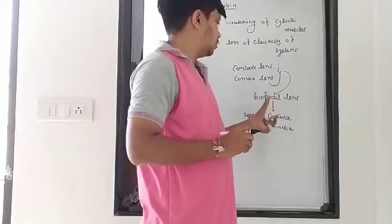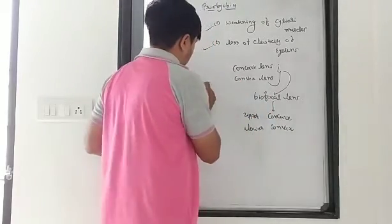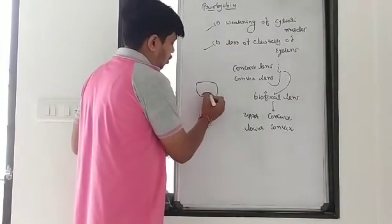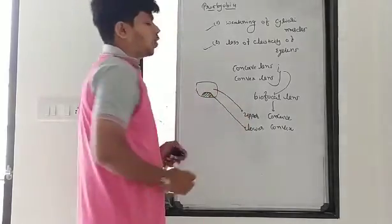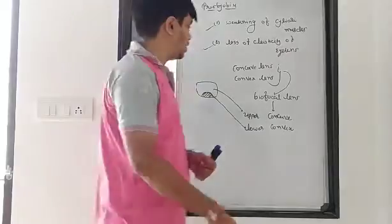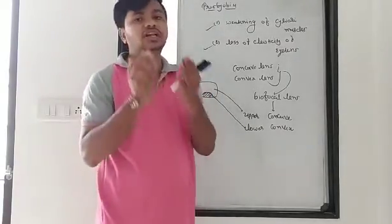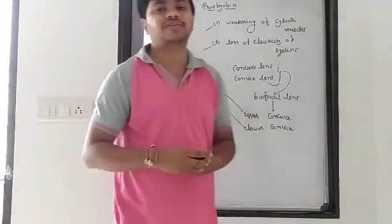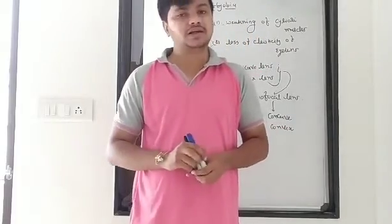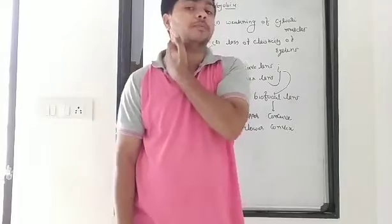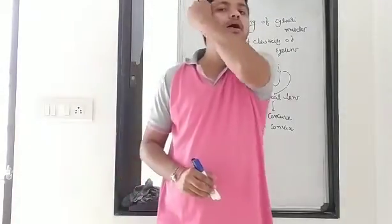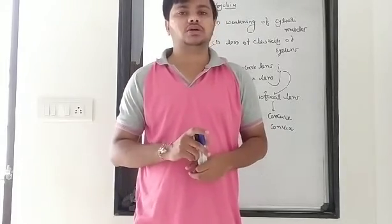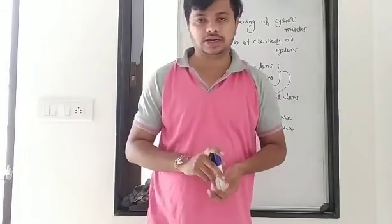You have seen the glasses of your grandparents — the bifocal glasses have two portions. The upper portion is a concave lens, and the lower portion is a convex lens. Whenever you want to see a far object, you look through the upper portion. Whenever you read, you look through the lower convex portion. So they can clearly see objects with the help of bifocal glasses. This is our third defect of vision, presbyopia. The next topic will be seen in the next lecture. Thank you.